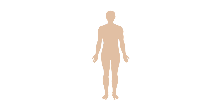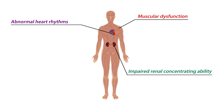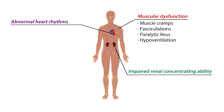However, as serum potassium begins to drop, the following symptoms begin to appear. One of the most prominent and detectable symptoms is muscular dysfunction, like muscle cramps, fasciculations (which are small involuntary muscle contractions), paralytic ileus (which is temporary intestinal paralysis), hypoventilation or lower respiratory rate, hypotension or lower blood pressure, and rhabdomyolysis, which is muscle injury.